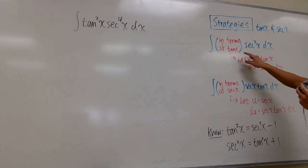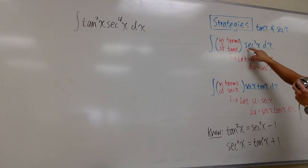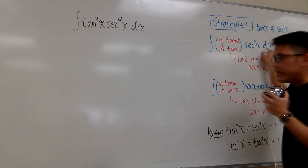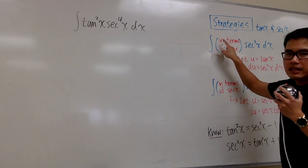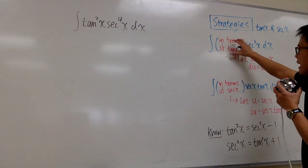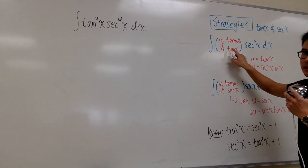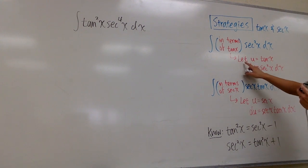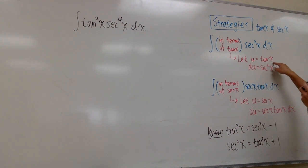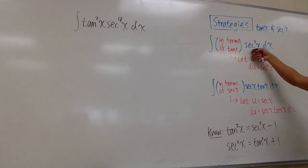If we can have the integral in this form — where we have secant squared x dx on the side, and we can make the first part in terms of tangent x — then we can just use u-substitution, letting u equal tangent x, because du will be secant squared x dx, and this will match.